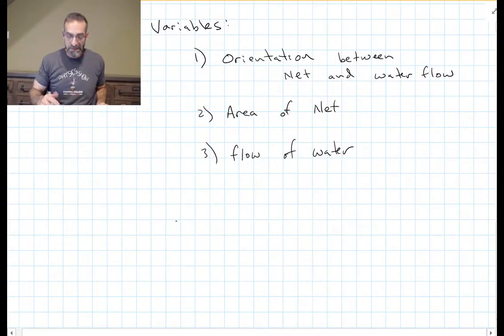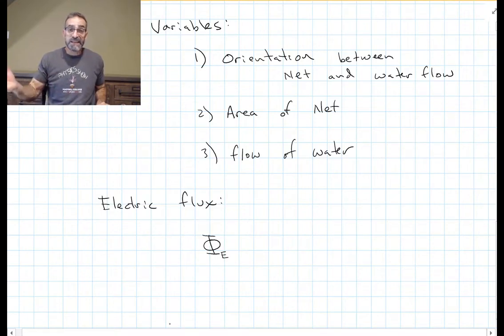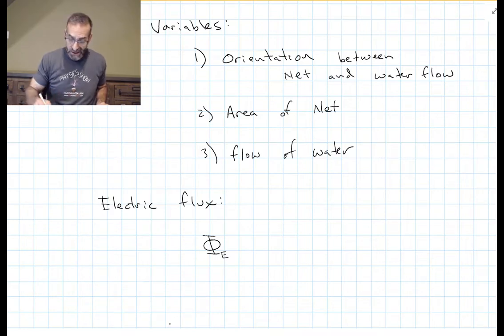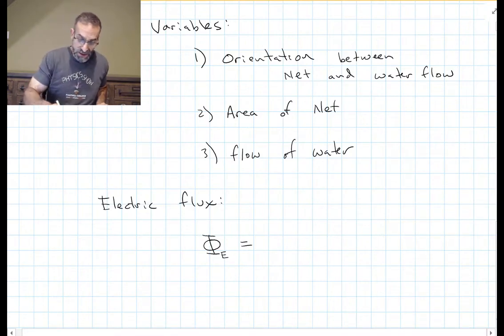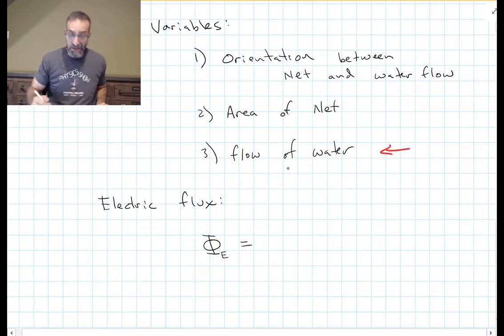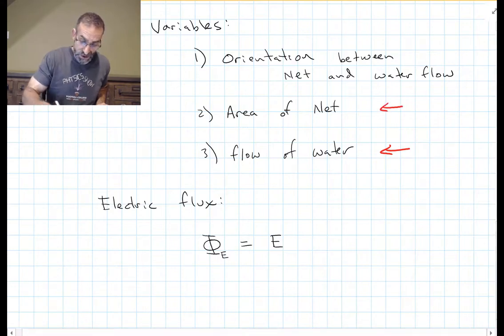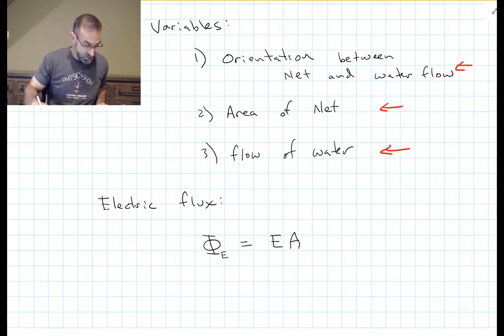Now let's talk about electric flux. We'll use a small E to indicate it's the electric flux, because in a few weeks we're going to be talking about magnetic flux also. The electric flux is the amount of electric field that penetrates a surface. It depends on the strength of the electric field — that's like the flow rate of the water — the area of our surface, and the orientation between the two.